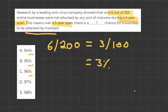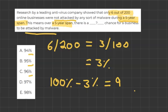Now this 3% is talking about businesses that were not attacked, and we're looking for the ones that were attacked. So if we say 100% of businesses have the potential to be attacked, and we remove 3% — which are the businesses that were not attacked — we end up with our final answer of 97%.